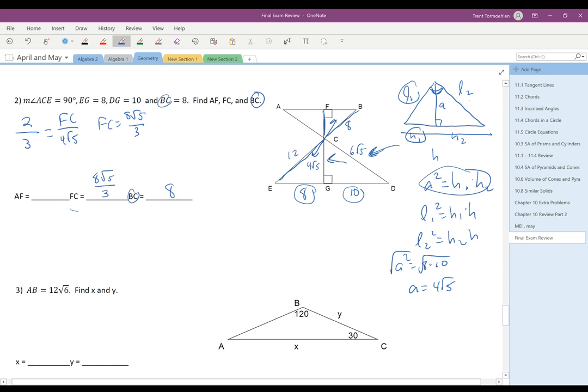And then if we want to calculate AF, that's this length, we can use the 2 to 3 again. And the one that it's going to be comparable to is the 10. And so we're going to say 2 to 3 is equal to AF over 10. And so AF is just going to equal 20 over 3.